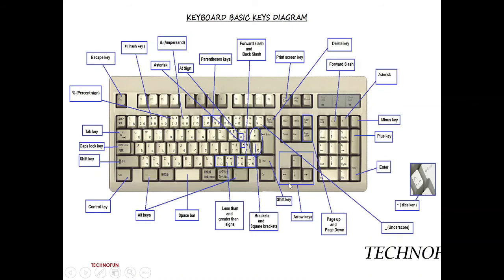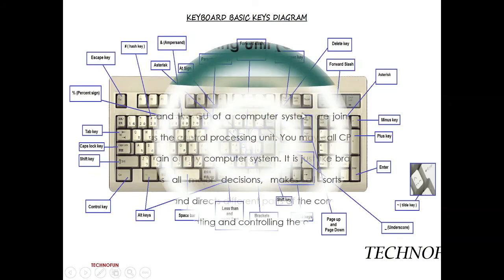And these are the arrow keys, also known as directional keys, which are used to move the position of the cursor. And this is the numeric keypad, which has numeric numbers and plus symbols printed on it. There is also an enter key which is used to end a line or move to the next line. This is all about the keyboard.